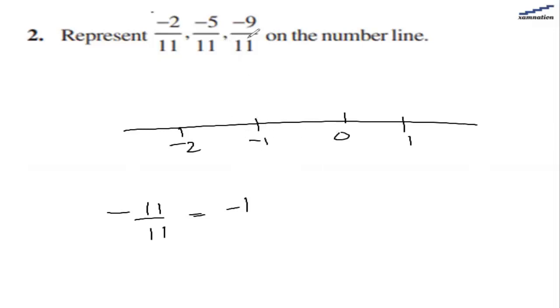The smallest of these numbers is minus 9 by 11. After this, we have minus 5 by 11, which is closer to the midpoint, and then we have minus 2 by 11, which is closer to 0.